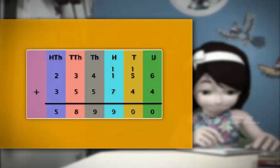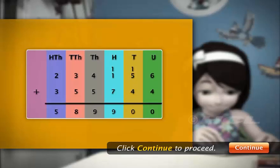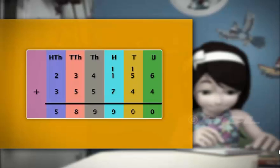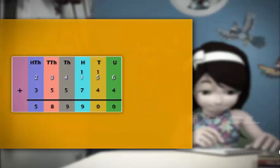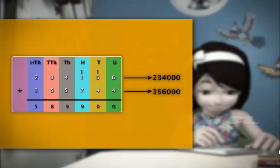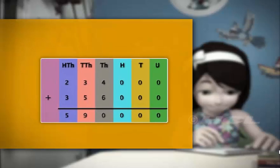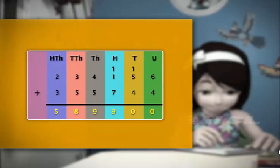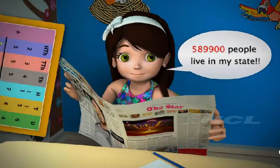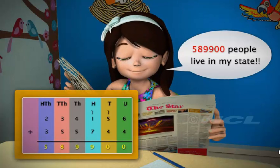Now, what do we do to check the answer? We compare this value with the estimated value. Rounding off 234,156 and 355,744 to the nearest numbers, we get 234,000 and 356,000. Adding the estimated values, we get 590,000. Since this value is close to the actual value, our answer is correct. So Sela, there are 589,900 people living in your state.